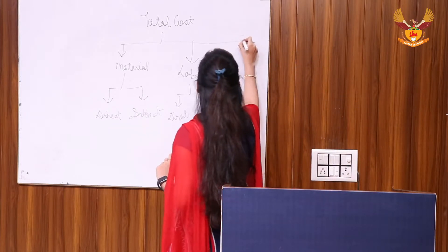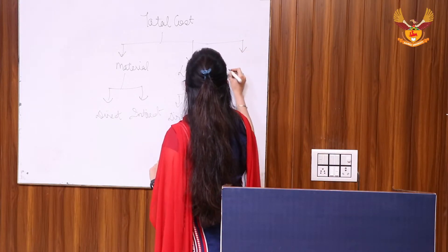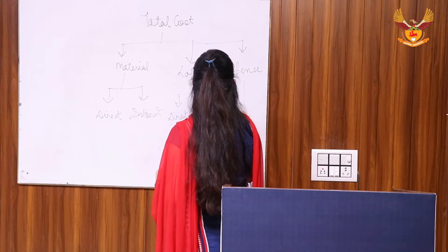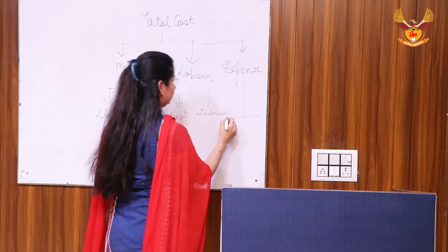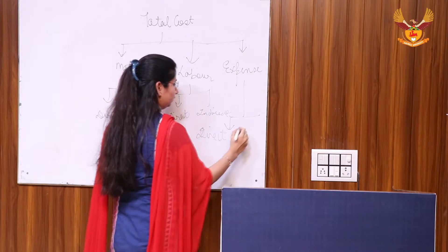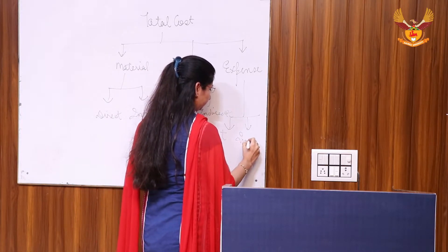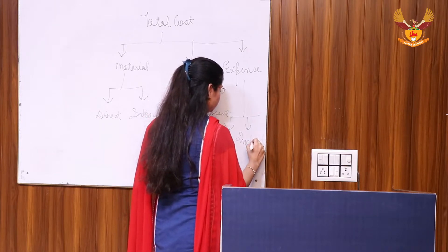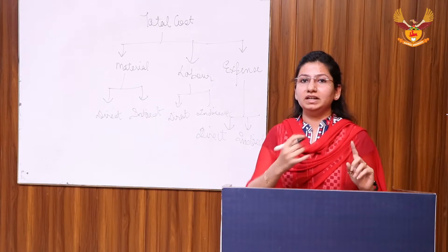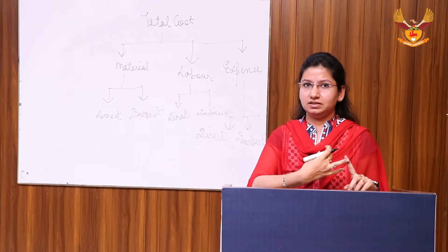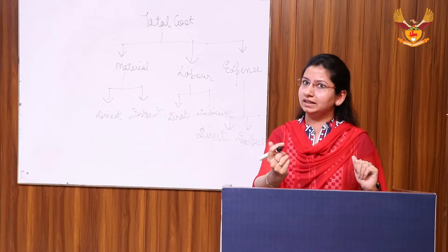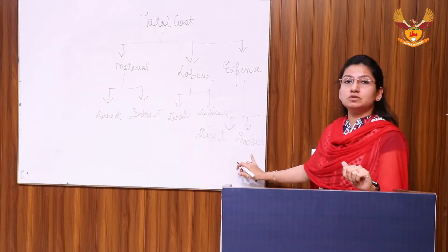The third part is expenses. Expenses will again be divided into two parts: direct and indirect. Direct expenses are those related to production, including carrier charges, any type of tax, or any liability paid directly to bring in the raw material or the labor.